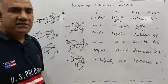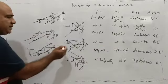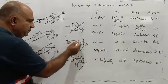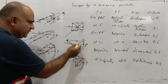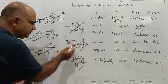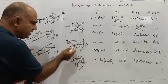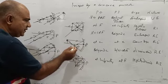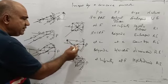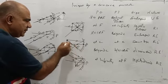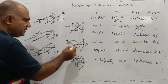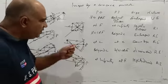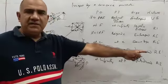Next, we keep the object beyond C. One light ray is parallel to the principal axis and passes through the principal focus. Another one passes through the center of curvature and retraces its path. They intersect at a point which lies between C and F. So the object is kept beyond C and the image is formed between C and F. This image is diminished, real, and inverted.